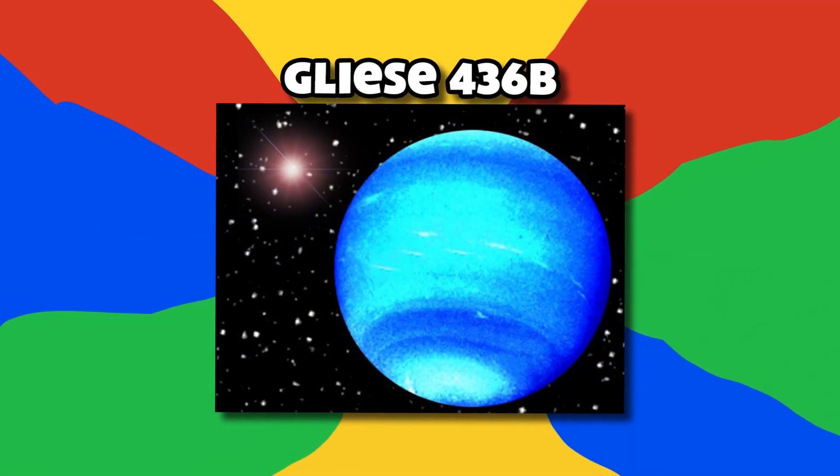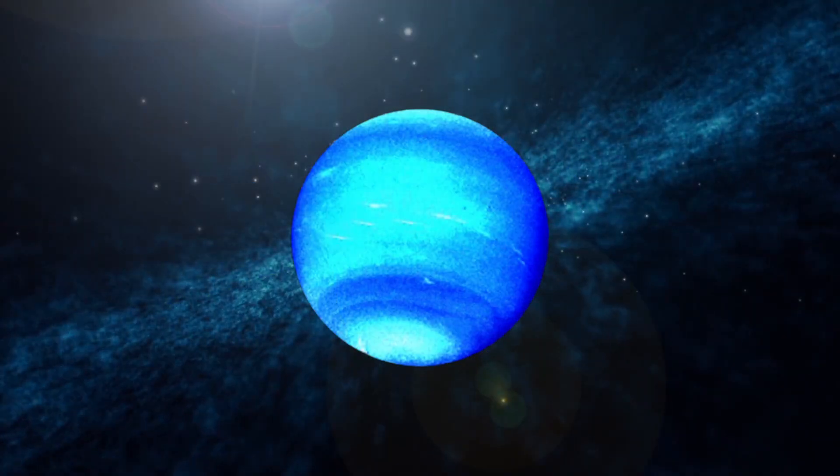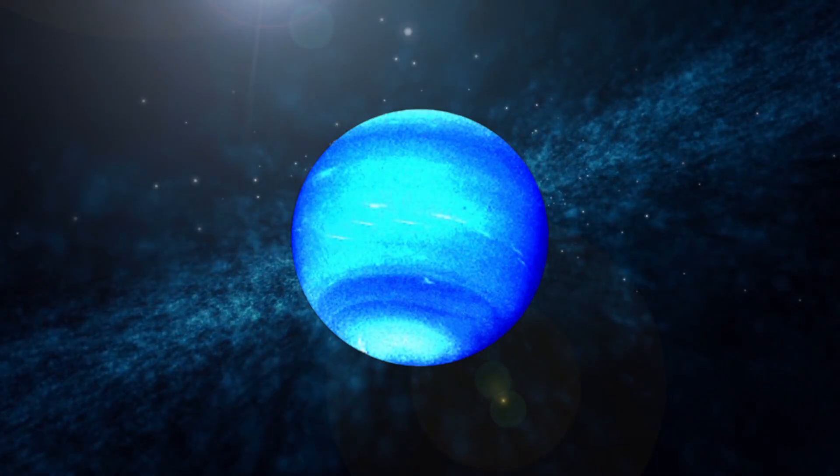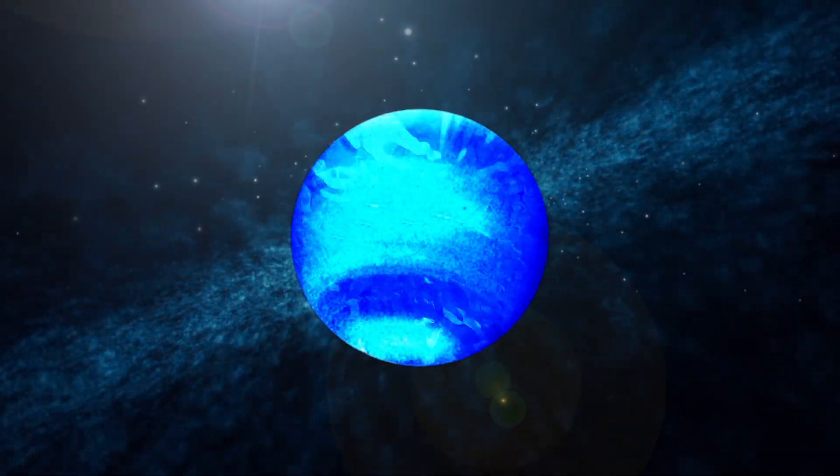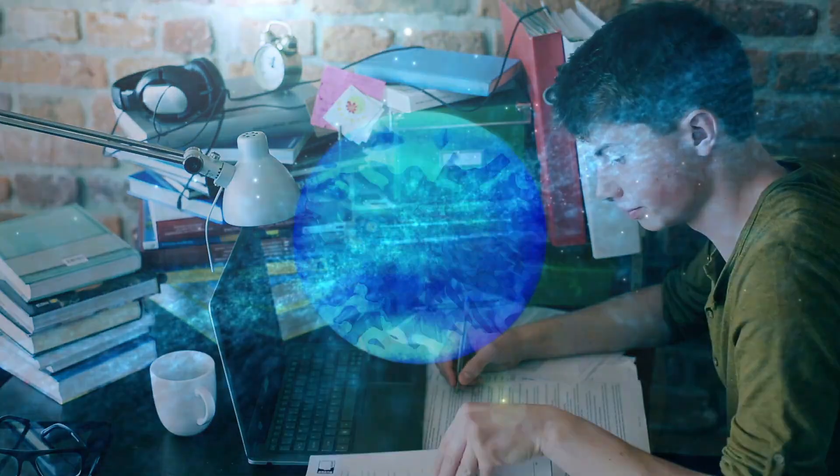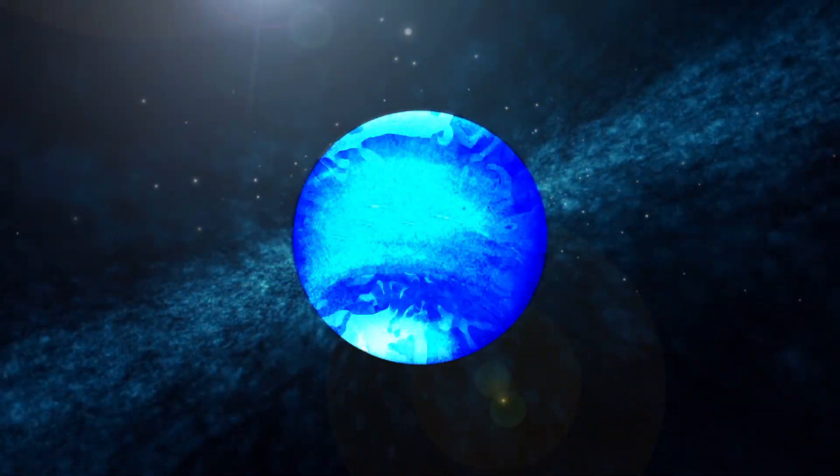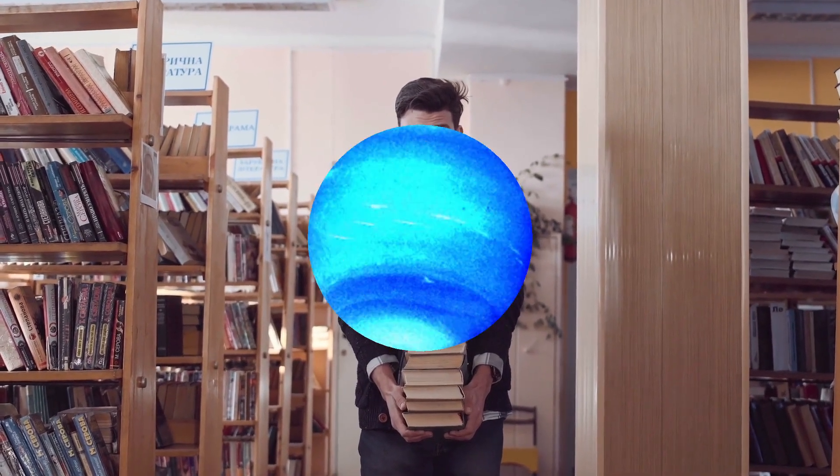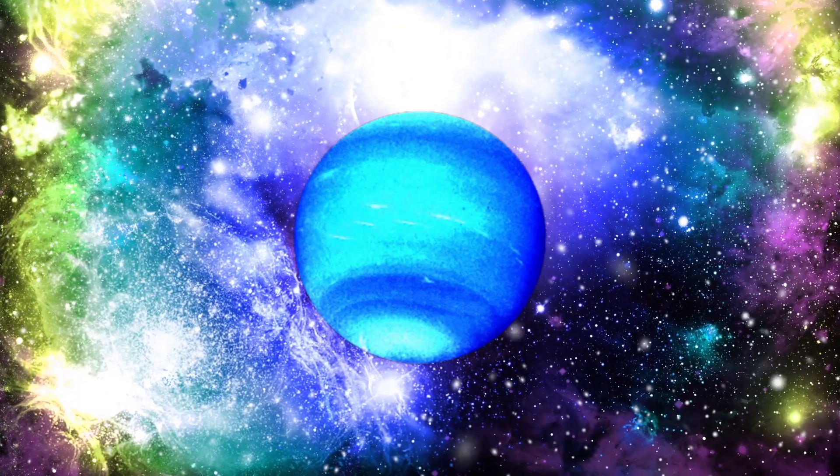Number 5, Gliese 436b. This is perhaps the most intriguing exoplanet out there, due to one reason alone. It's covered mainly in hot ice. Contradictory as it may sound, it is possible, and Gliese 436b is living proof. While it initially puzzled scientists, they were able to find out that the formation of hot ice is possible, due to the planet's unique makeup.